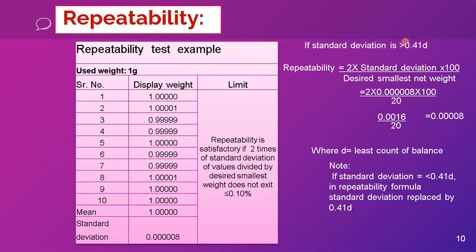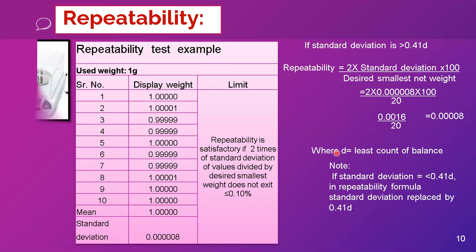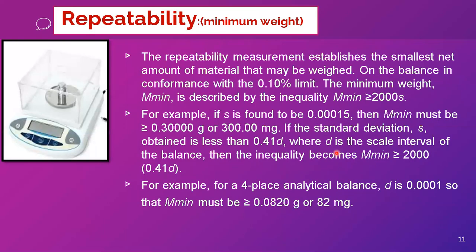There is one more condition: if the standard deviation is less than 0.41D — where D is the least count of the balance — then instead of the actual standard deviation, we use 0.41D in the formula. If 0.41 × least count is greater than the standard deviation, we substitute 0.41D in place of the standard deviation and apply the same formula.